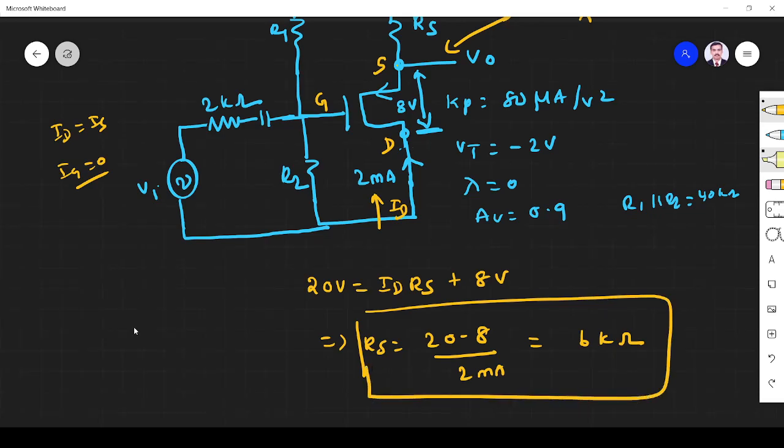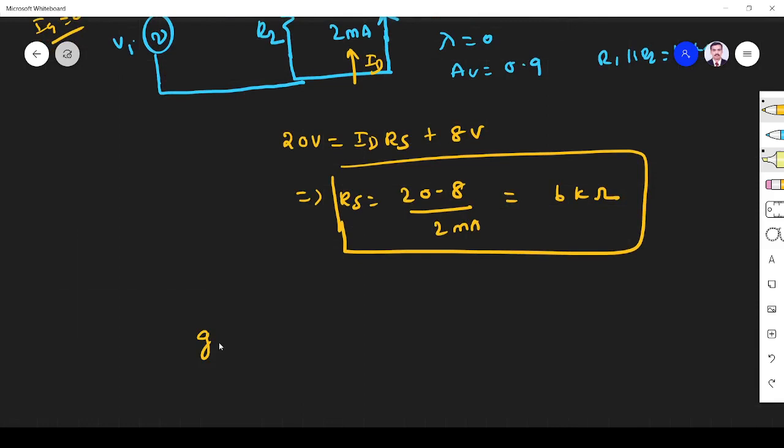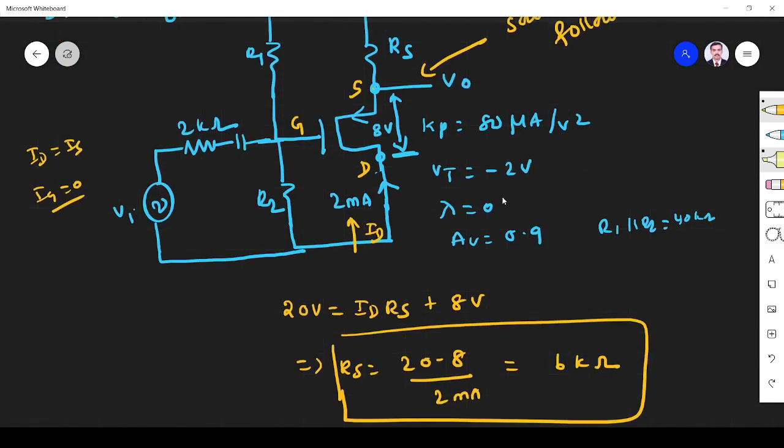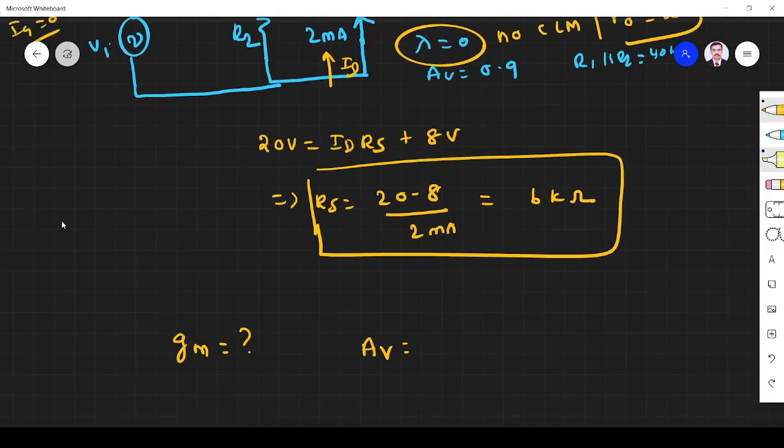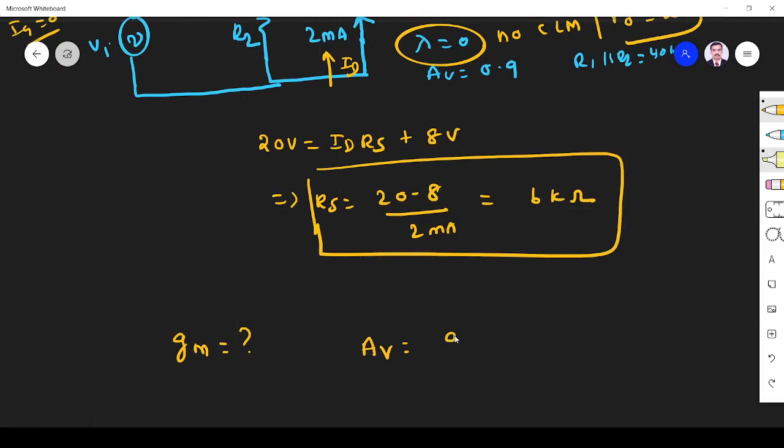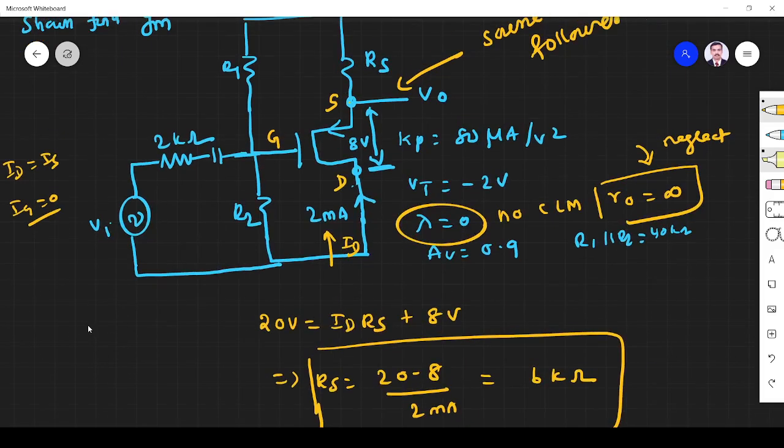RS we found, while they ask gm. You know what is the equation for gm? So we have to find gm from voltage gain. You see in the question they are given lambda is equal to zero, that is no channel length modulation. No channel length modulation means ro is infinity, that is open. So we can neglect ro, it is infinity, so open. So AV will become for MOSFET gm. Actually it is RS parallel ro but here ro is infinity so we can neglect. gm RS divided by 1 plus gm RS.